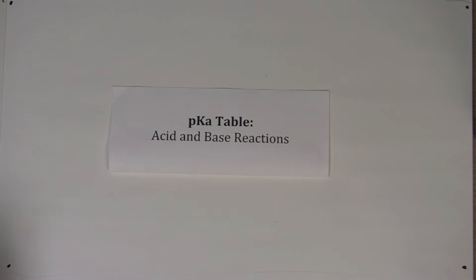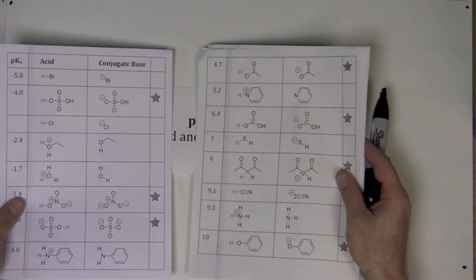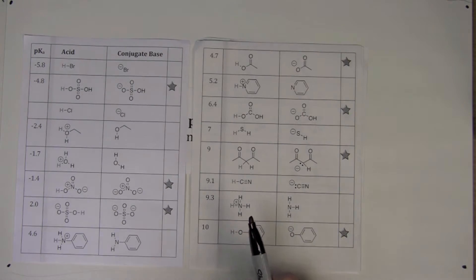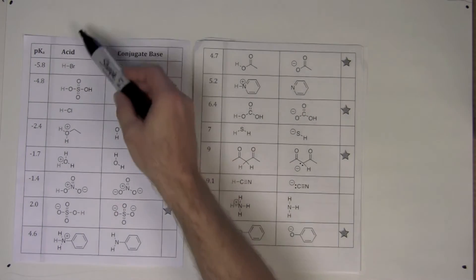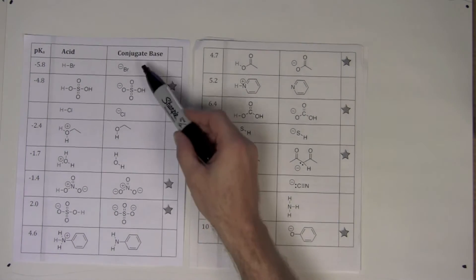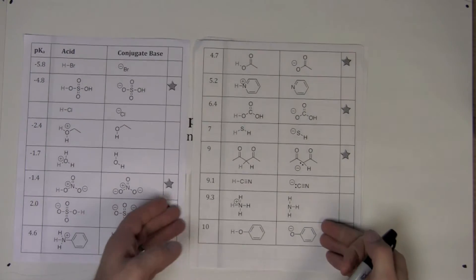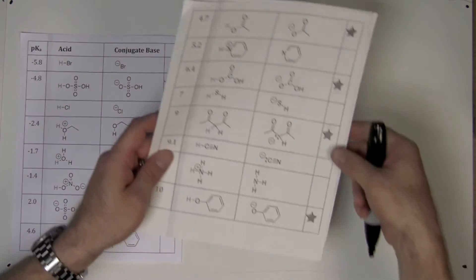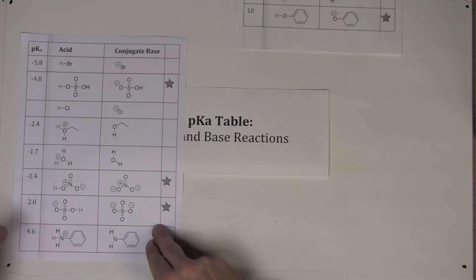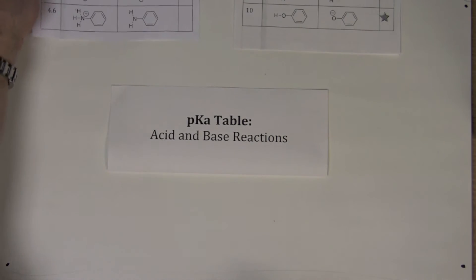This organic chemistry video demonstrates using the pKa table to practice acid and base reactions and writing organic mechanisms. On the pKa table you have an acid and its conjugate base. To practice writing acid and base reactions, simply take an acid and react it with a base.